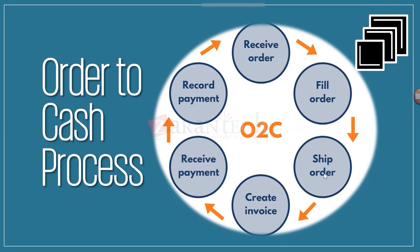Along with the item, you also send the customer an invoice — showing the item, in this case an iPhone, and its price. Based on the invoice, the customer makes a payment and you receive that payment. Once you receive the payment in cash, you record the payment. Once recorded in your system — meaning Workday — your process is complete.